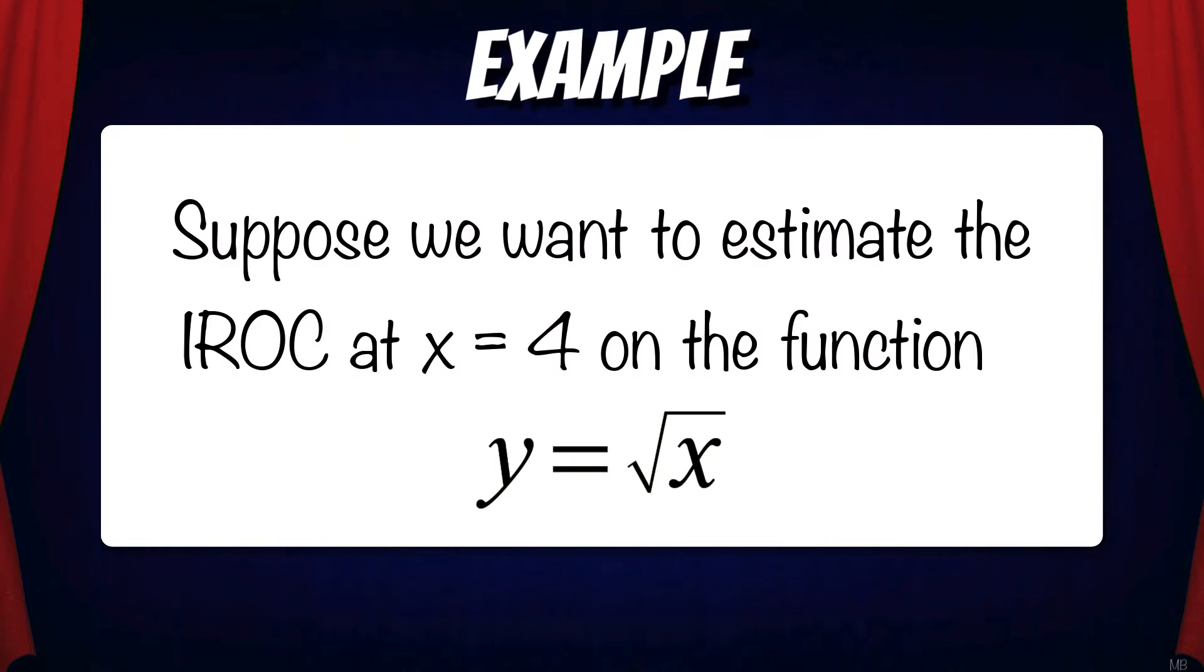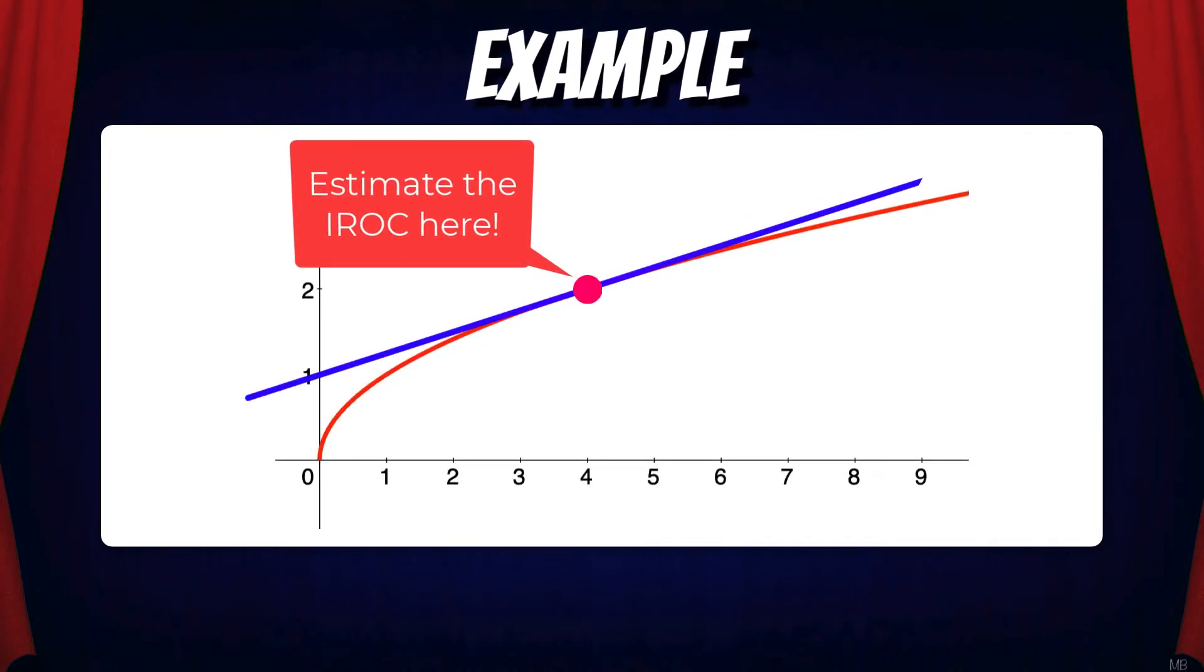Suppose we want to estimate the IROC at x equals 4 on the function y equals radical x. Again, if we apply the Average Rate of Change formula, we're going to get an indeterminate form.